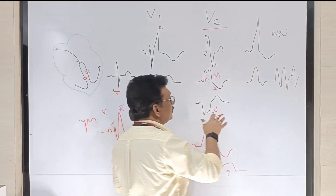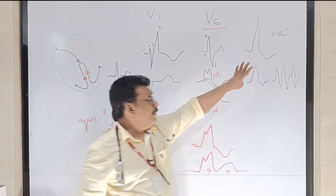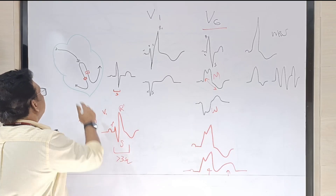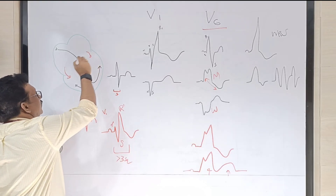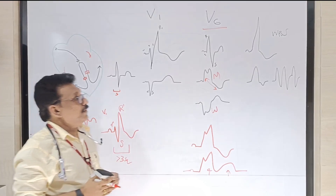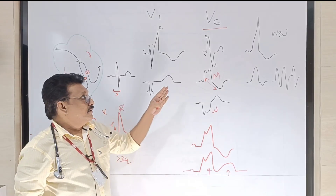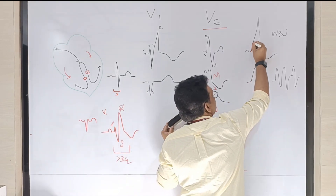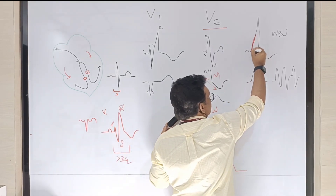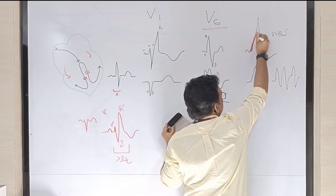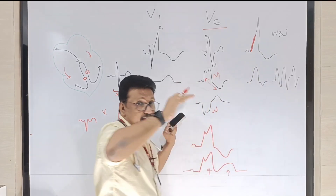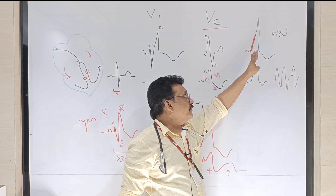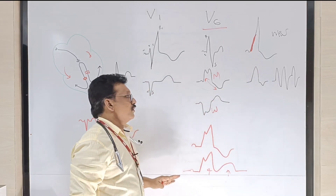Another cause for wide QRS complex is WPW syndrome, which we learned last time. In WPW syndrome there is an accessory pathway, and when conduction goes through it, the PR interval will be shorter and there is a slurring in the upslope of the QRS complex called a delta wave. The lower part of the QRS is wide, giving you a wide QRS complex overall.